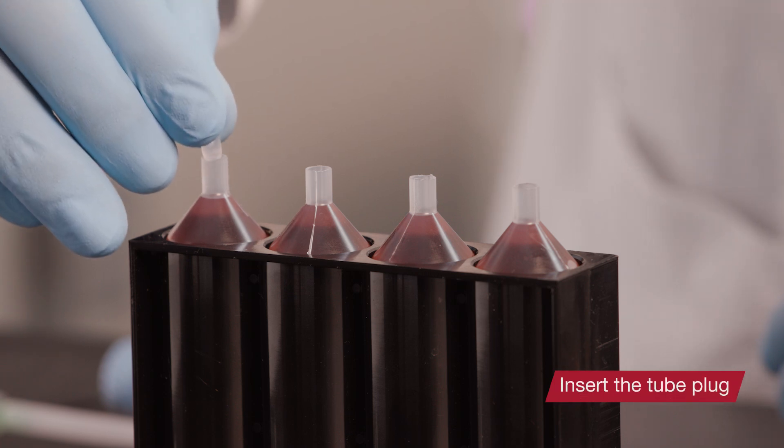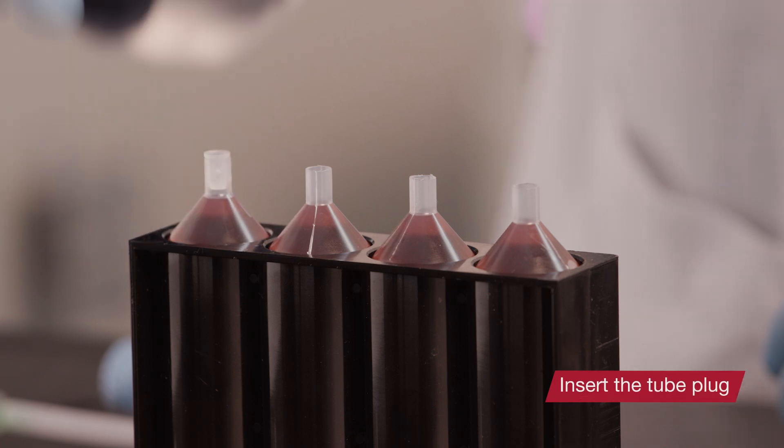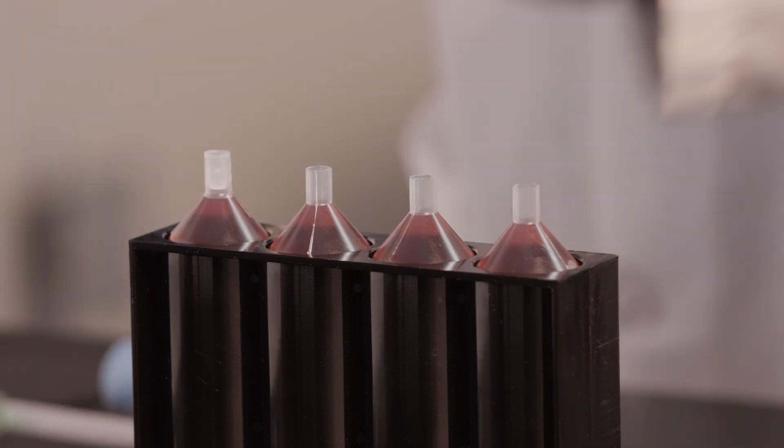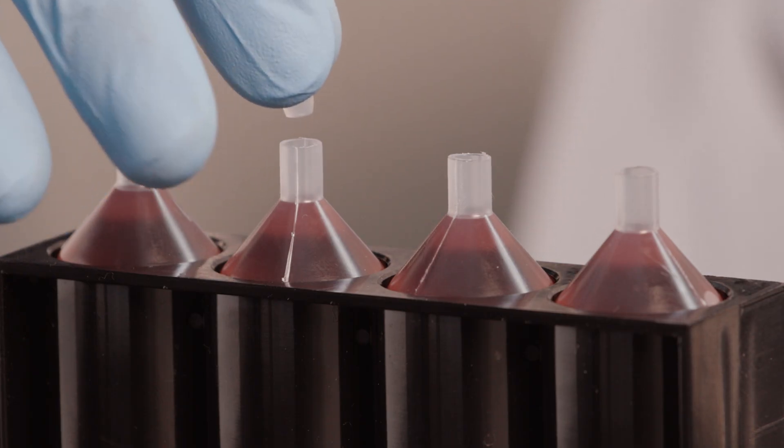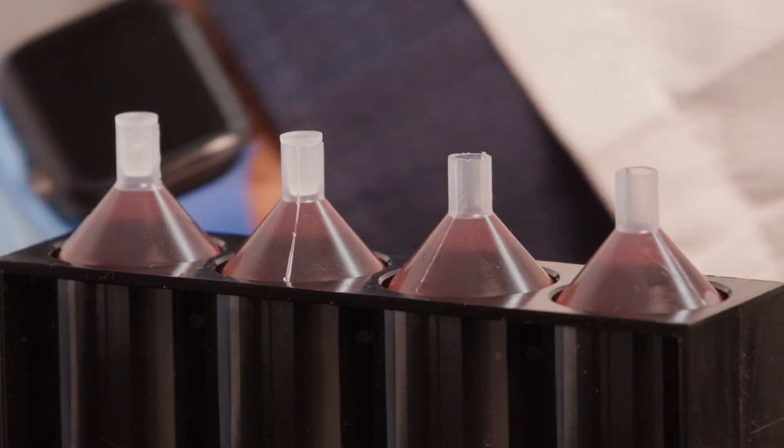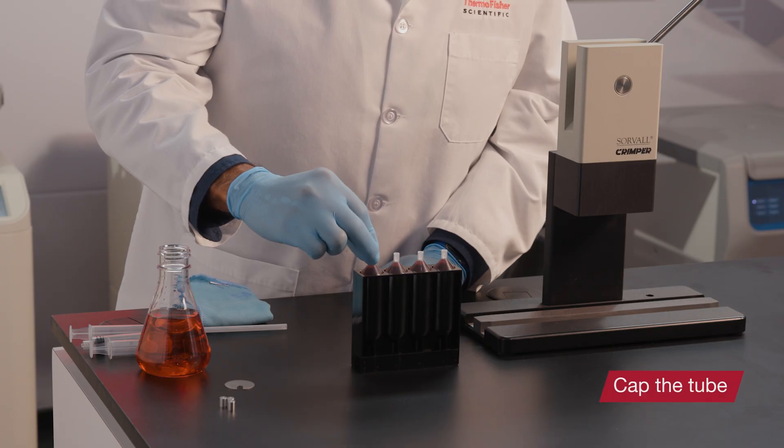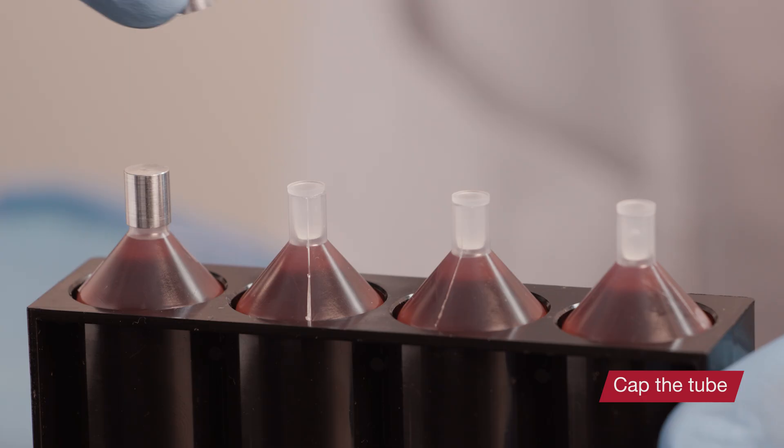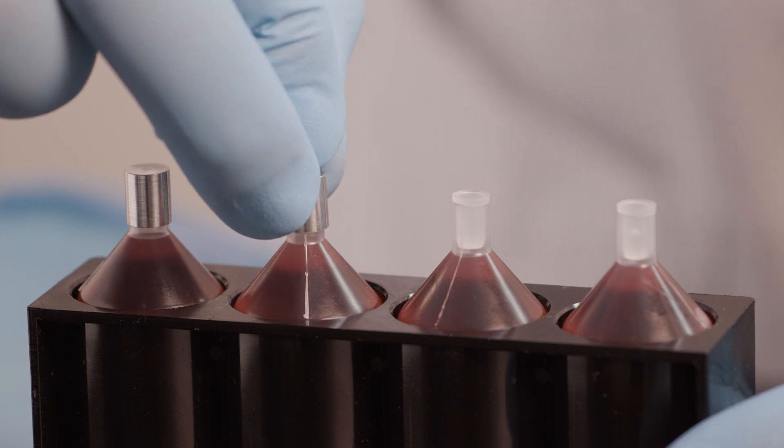Next, insert a tube plug completely into the tube neck. The fluid level in the tube should be approximately 1.5 millimeters below the bottom of the plug. Place an aluminum tube cap over the top of each plugged tube.